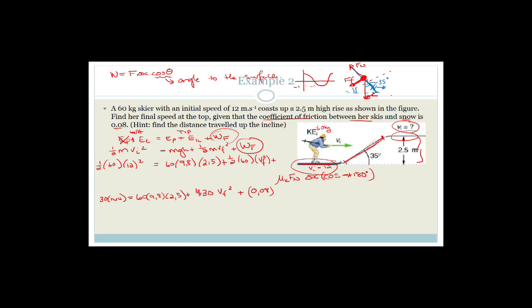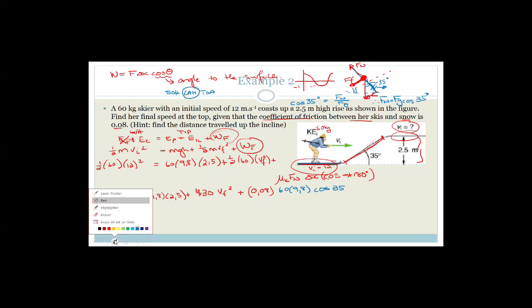Using SOHCAHTOA: we have the adjacent side and the hypotenuse, so we use cosine. Cos 35 degrees equals F_normal over F_gravity. Therefore, F_normal equals F_gravity times cos 35 degrees, which means F_N becomes mass (60) times 9.8 times cos 35, and then we multiply by delta x, with cos of 180 giving minus 1.